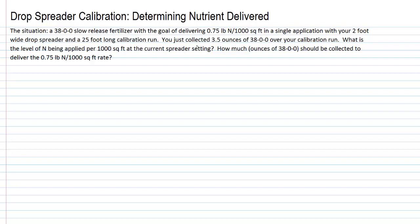We perform our calibration and we find that we collected 3.5 ounces of 38-0-0. Two questions to be answered: what's the level of nitrogen being applied per thousand square feet at the current spreader setting, and how much in ounces of 38-0-0 should be collected to deliver the three-quarter pound of N per thousand rate?